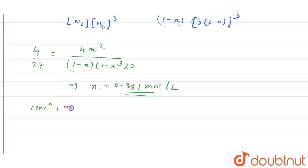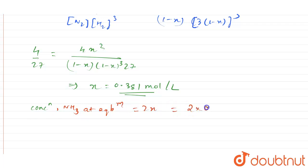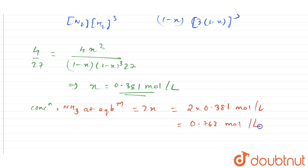Since we were asked for the concentration of NH₃ at equilibrium, and that equals 2x, we calculate 2 × 0.381 = 0.762 mole per liter. So the concentration of ammonia at equilibrium is 0.762 mol/L.